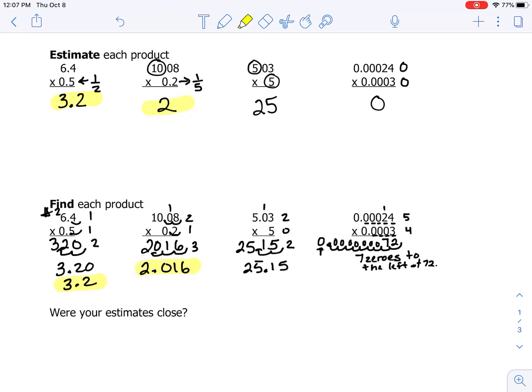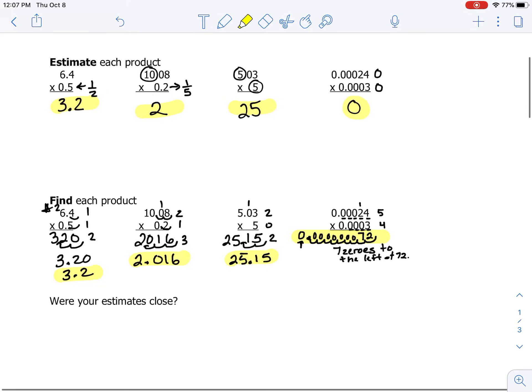The next one, 25.15 and 25, really close. And this really small number here is pretty close to zero. So I would say we did a good job in correctly placing our decimal points and multiplying correctly.